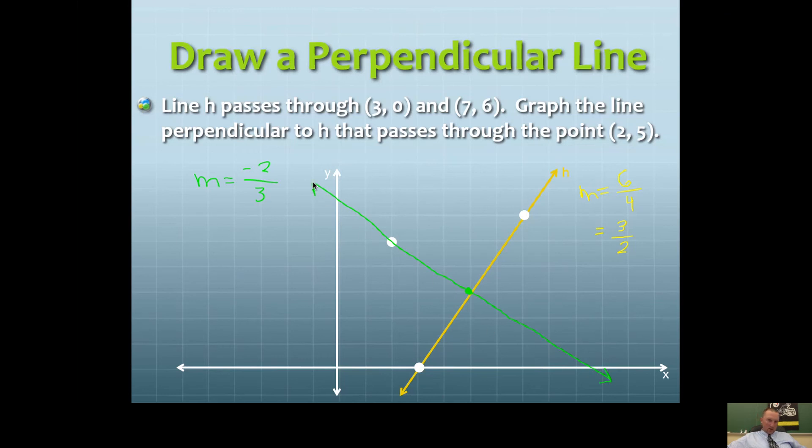This is the one and only line that's perpendicular to this line. How do I know? Well, I found the slope of this line. I know what the slope of this line has to be.